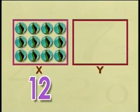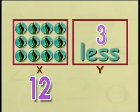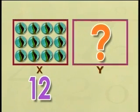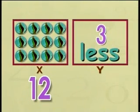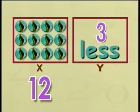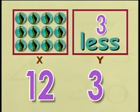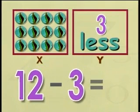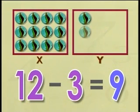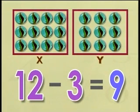There are 12 marbles in box X. Box Y has 3 marbles less than box X. How many marbles are there in box Y? Box X has 12 marbles and box Y has 3 less. To find the number of marbles in box Y, we have to find the difference between 12 and 3. So take away 3 from 12 and we get 9. There are 9 marbles in box Y.